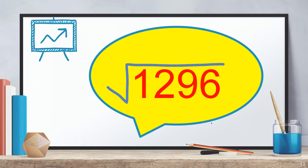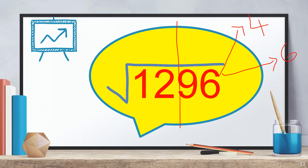Special case: √1296. Try using the technique we've learned — split into groups: 12 and 96. Since it ends with 6, the answer ends with 4 or 6. The perfect square below 12 is 9, and √9 = 3. So the choices are 34 or 36. To decide, multiply 3 × 4 = 12.